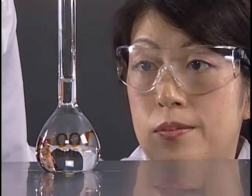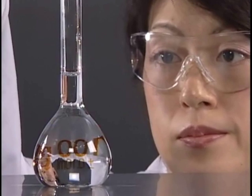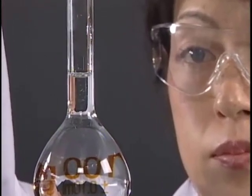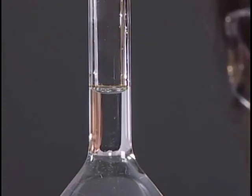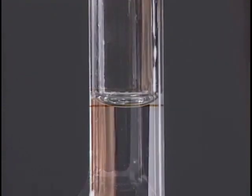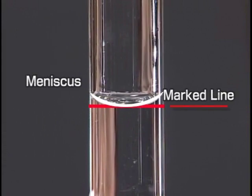First, move your eyes to the level of the marked line of the flask. Then, add distilled water drop by drop with a transfer pipette till the base of meniscus matches with the marked line.